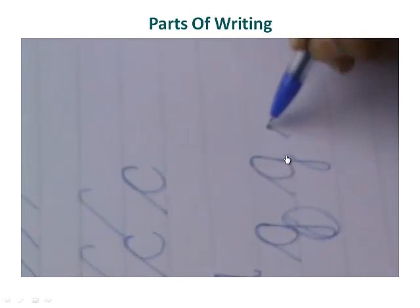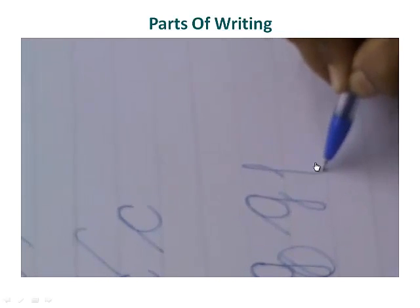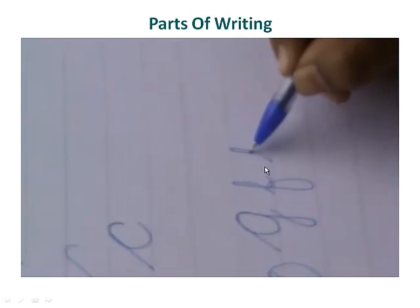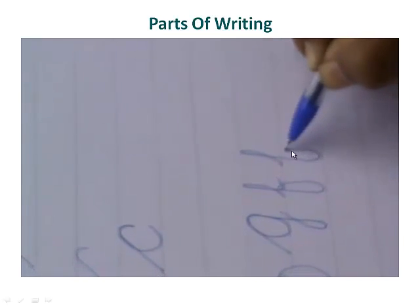Now when you write F, you are using both ascender and descender. When you go up, it is known as the ascender. When you go down, it is known as the descender.